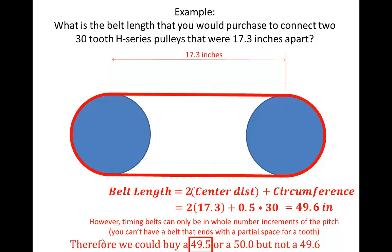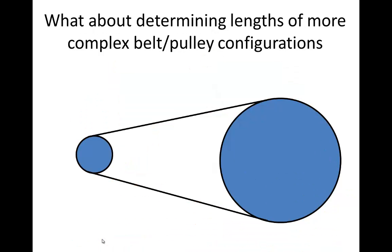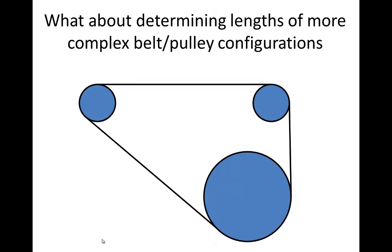What about determining lengths for more complex belt-pulley configurations? If the pulleys are not equal in size, the calculation is not that straightforward. And what if we have something even more complex with multiple pulleys? How would you determine the length of belt needed? Well, I would take advantage of CAD and just quickly draw it and measure it.